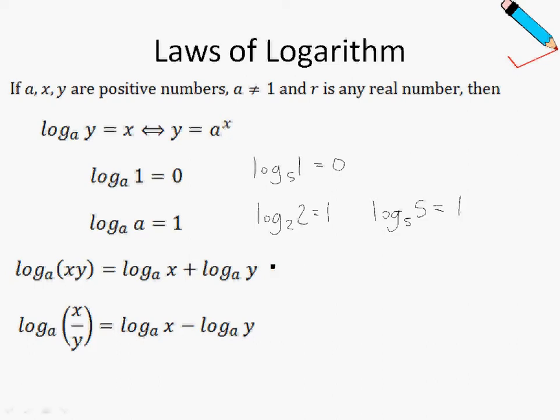Fourth law: log base 2 of 3 times 5 can be broken down to log base 2 of 3 plus log base 2 of 5. Take note that multiplication over here can be broken down to addition, and this only works if it is a common base. Similarly, this law can also work the other way. So log 2 of 3 plus log 2 of 5 will be equals to log base 2 of 3 times 5, which is 15.